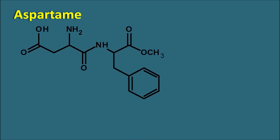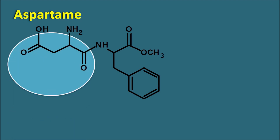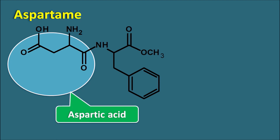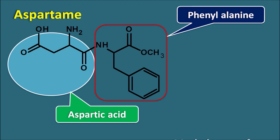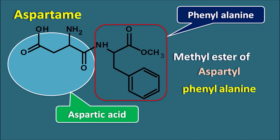The next one is aspartame. Aspartame is not a drug but a sweetening agent. In its structure, one amino acid has a four-carbon chain with a carboxylic acid side chain — this is aspartic acid — and the other amino acid is phenylalanine. So aspartame is a methyl ester of aspartyl-phenylalanine — a methyl ester of a dipeptide. This synthetic sweetener has a sweetness approximately 200 times greater than sucrose.